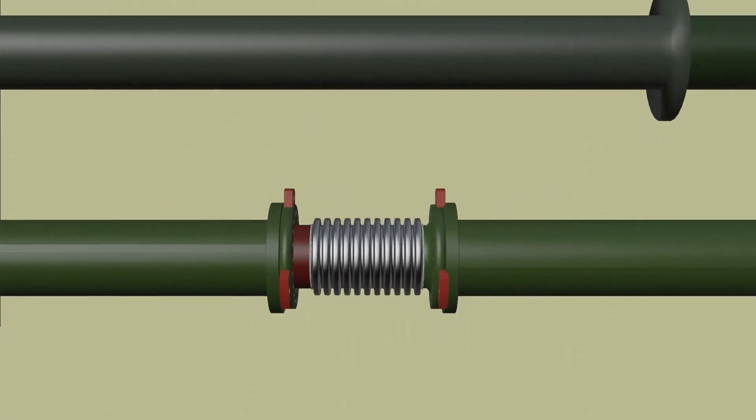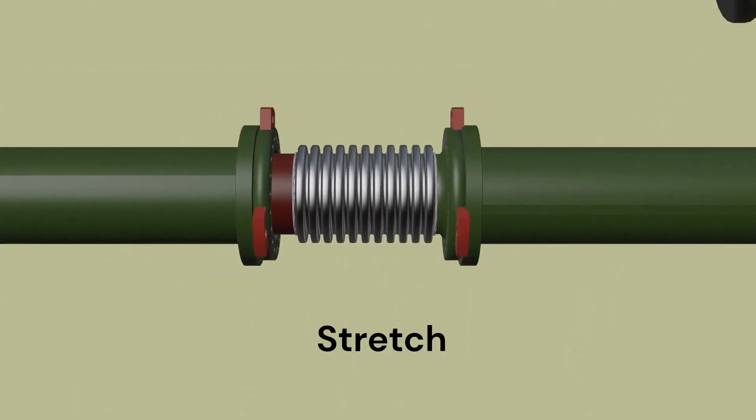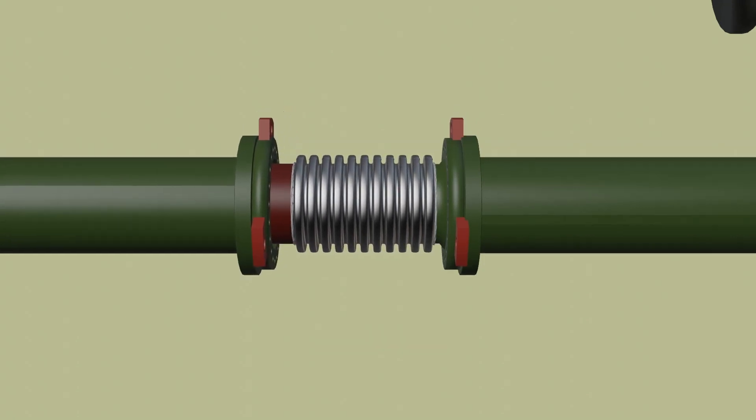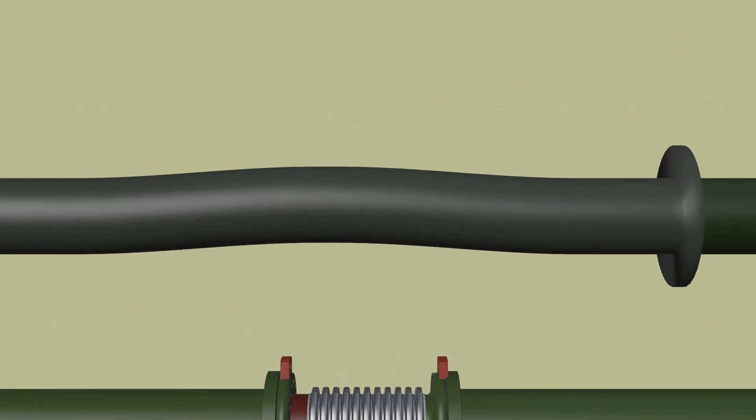They can also be used to absorb contraction in cryogenic pipelines. Without an expansion joint, the pipe will bend due to thermal expansion.